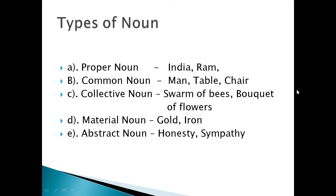There are five types of noun. First, proper noun — examples are India, Britain, or a person's name like Madhuri. Second, common noun — examples are men, table, chair, pillow, light, etc. Third, collective noun — examples are swarm of bees, bouquet of flowers. Fourth, material noun — examples are gold, iron, silver, etc. Fifth, abstract noun — example is honesty. So these are the five important types of noun.